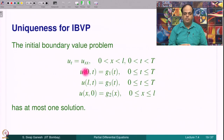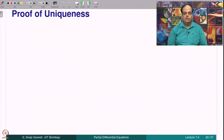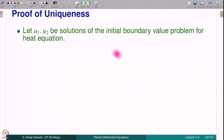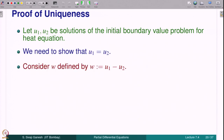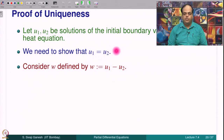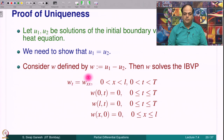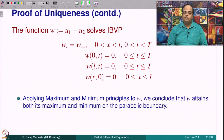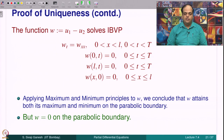Uniqueness for the IBVP: the problem has at most one solution. To prove this, assume U1 and U2 are solutions and consider the difference W = U1 − U2. Then W satisfies the heat equation with zero initial and boundary data. Applying the maximum and minimum principles to W, we conclude that W attains both its maximum and minimum on the parabolic boundary, where W = 0. Therefore W ≡ 0, proving uniqueness.